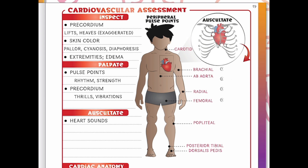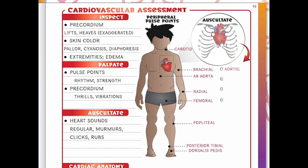Then we auscultate — listening for heart sounds, murmurs, clicks, or rubs. The more you listen, the more you'll detect what differs from the classic lub-dub. There are four points where we place the stethoscope: the aortic valve at the second intercostal space at the right sternal border; the pulmonary valve at the second intercostal space at the left sternal border; the tricuspid valve at the fourth intercostal space at the left sternal border; and the mitral valve at the fifth intercostal space at the left midclavicular line.